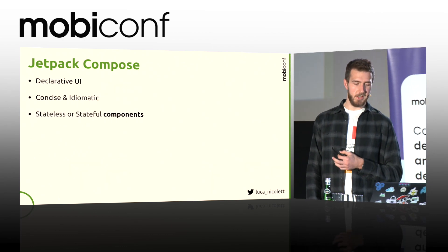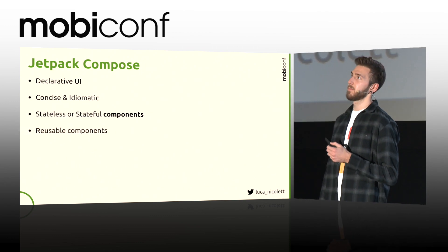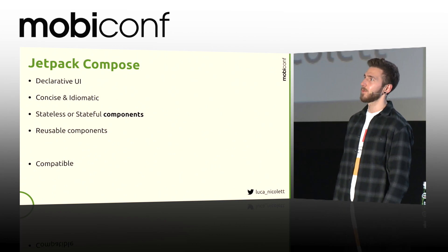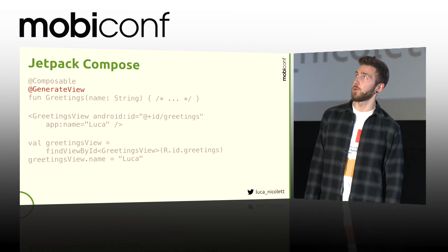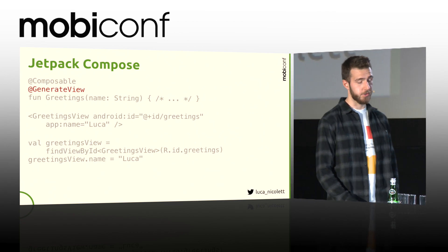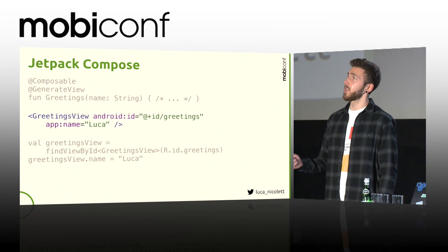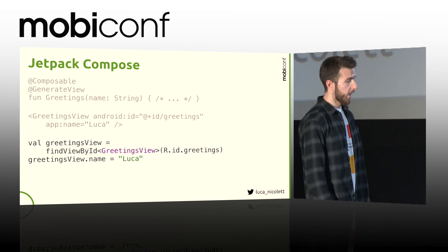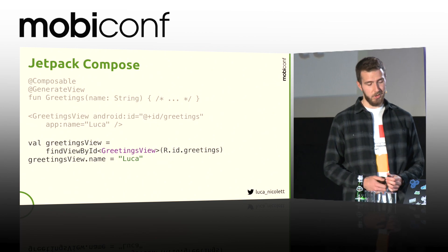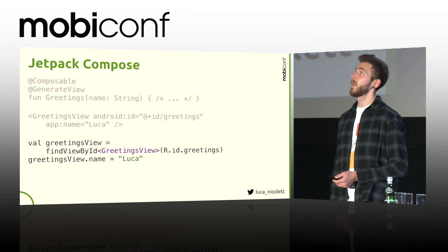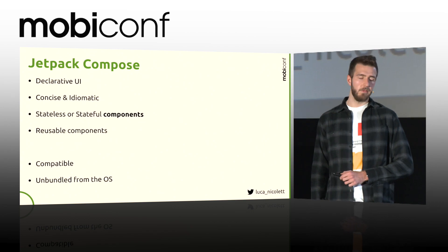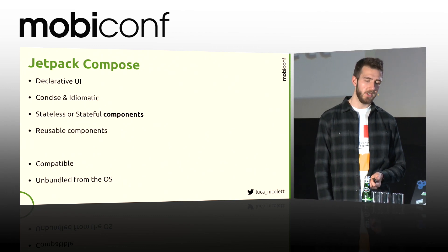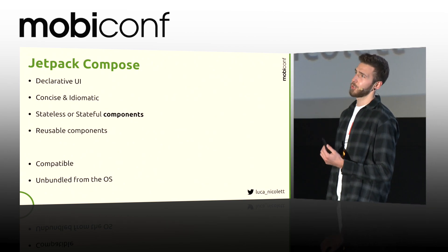Jetpack Compose is built on stateless or stateful components, and those components are meant to be reusable. Jetpack Compose is also compatible — they introduced an annotation called generateView, which was meant to generate a view class from a function, a standard view like any other, which you could then use in your XML files or in Java and Kotlin code. This annotation is not available anymore, and I guess they warned us by saying it's pre-alpha. Jetpack Compose is also unbundled from the OS, meaning the version of the UI is not bound to the version of the system, so it should be easier to avoid compatibility issues between different API levels.